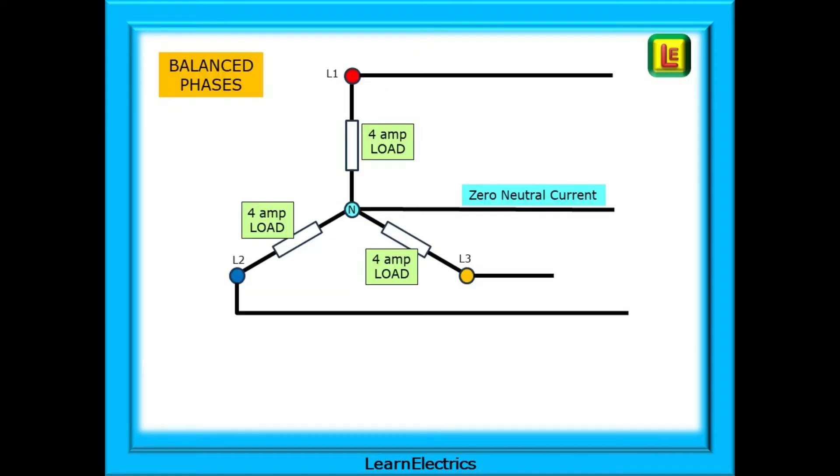Let's look at that in pictures. With balanced phases, 4 amps flows through the load on each phase. This might be motor windings, as an example. As a result, there is zero neutral current. This is why some motor circuits are four-wire only, three phases plus earth, with no neutral in the cable.